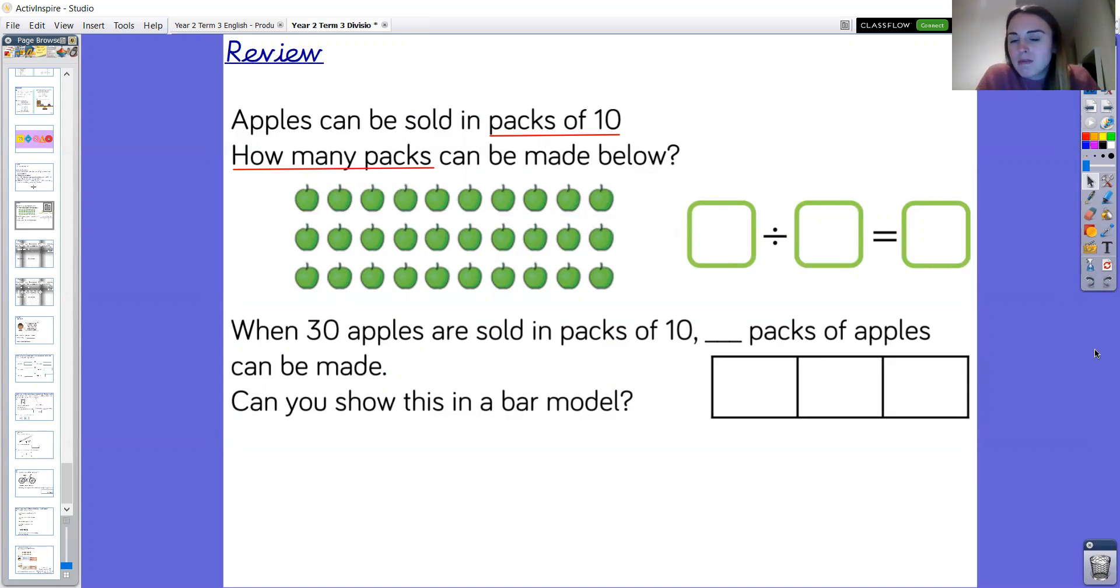Okay brilliant. So first of all I'm thinking what is the whole amount of apples, because that's going to be our dividend in our division sentence. So year two, what is the whole amount of apples? Well done. The dividend is 30 as that is the total amount of apples all together. Brilliant.